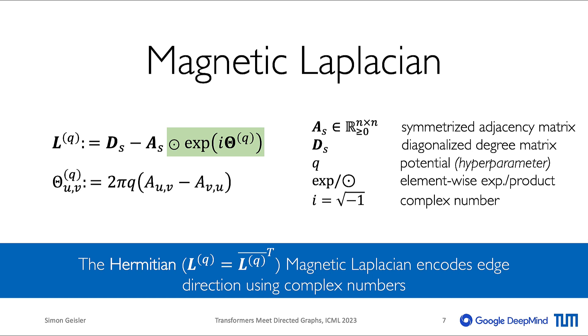we symmetrize the adjacency matrix and then obtain the diagonal degree matrix D. We then multiply the symmetric adjacency matrix with the asymmetric term highlighted in green that depends on the asymmetric adjacency matrix of the directed graph. This way,